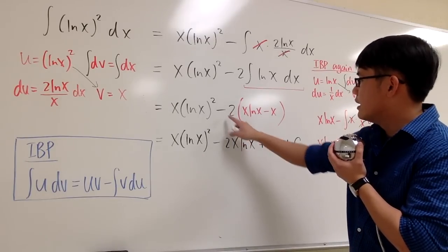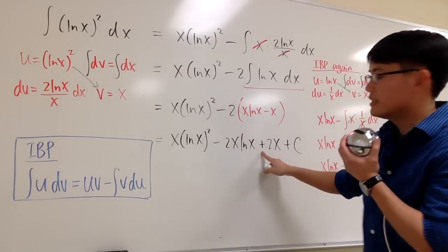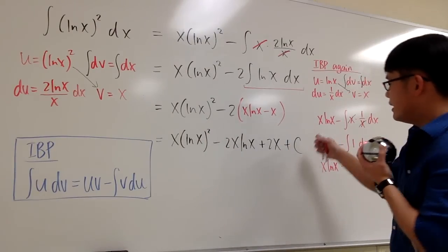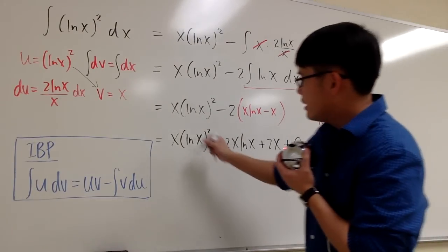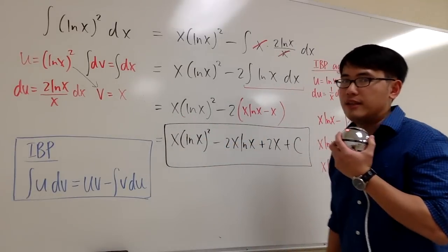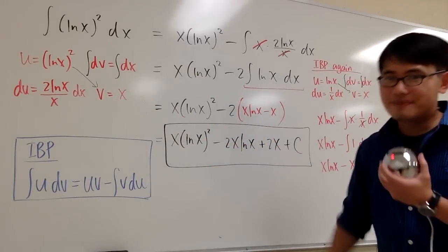minus 2x ln x. Negative 2 times negative x gives us positive 2x. That's the function part. And then just attach a plus C at the end. This right here is the answer. And as I like to say, this right here is it. That's it.